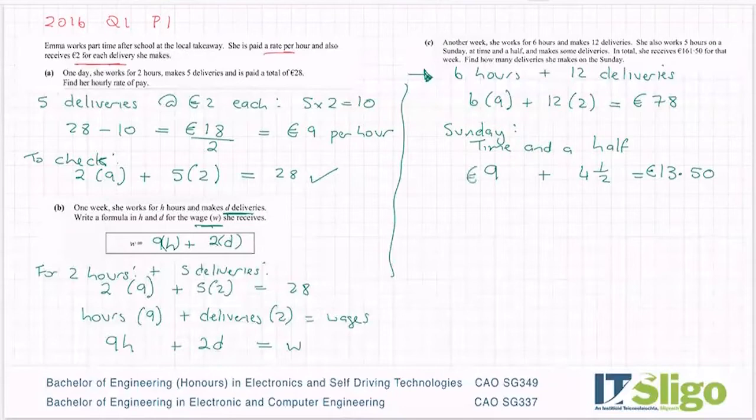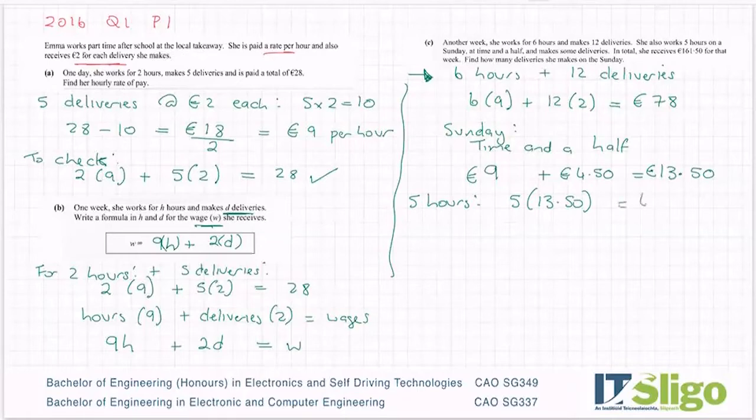So on a Sunday you get 13 euros 50 per hour. Okay, it's nine euros normally. The half is four and a half or four euros 50 if you want. Maybe it'd make more sense if I write it as that. So you get 13 euros 50 per hour on a Sunday. Now did you tell me how many hours she worked on a Sunday? It did. So five hours then is five times 13.50. So I am getting 67.50 then for the hours she works on a Sunday.